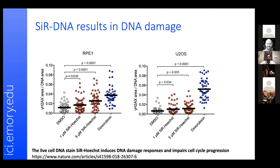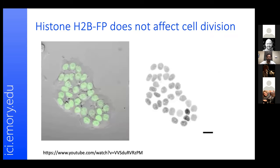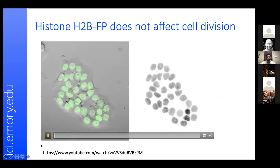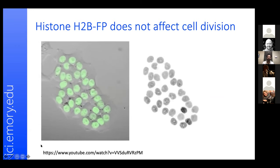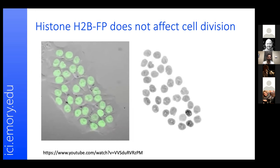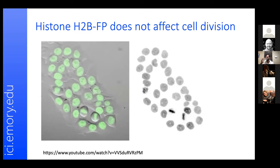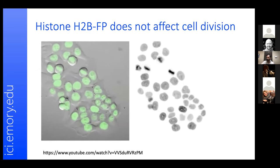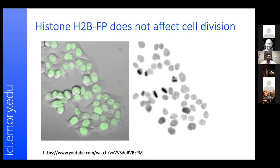Not only does Hoechst or any analog prevent cell division, it also reduces the number of cells entering mitosis. Furthermore, intercalation of these dyes into the nucleus results in DNA damage, which can be quantified by γH2AX foci — a marker of DNA damage. One must be very careful when using these dyes. In contrast, cells expressing histone H2B-GFP are perfectly happy and dividing normally, as seen in live-cell movies.